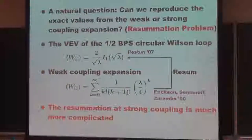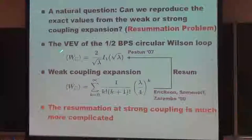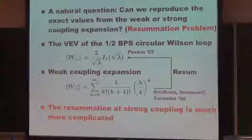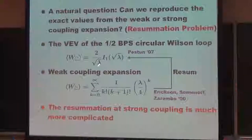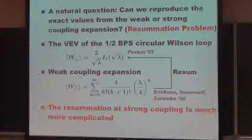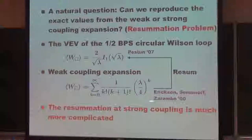Let me explain one example. Consider the expectation value of the half-BPS circular Wilson loop. As is well-known, this result can be derived using localization, and the result is exactly written by the modified Bessel function. On the other hand, there is a perturbative diagrammatic computation on the gauge theory side.